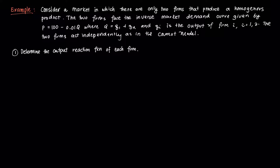Hi everyone, and welcome to this video on an example of the Cournot oligopoly and Cournot equilibrium which we discussed in the last video. We discussed the components and assumptions of a Cournot-type duopoly, wherein firms set output decisions simultaneously and try to optimize profit maximization based on the principles outlined by Antoine Augustin Cournot.